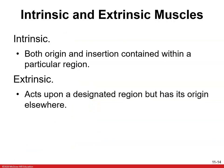There are intrinsic and extrinsic muscles. Intrinsics have both their origin and insertion contained within a particular region. Extrinsics act upon a designated region but have their origin elsewhere — for example, forearm muscles that originate at the elbow but produce movements at the hand. Intrinsics are muscles in your palm or foot that stay within that region. That's the difference between intrinsic and extrinsic.